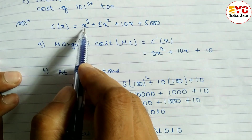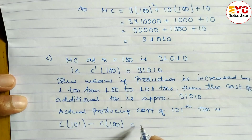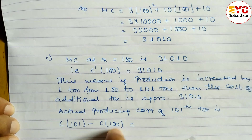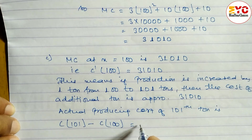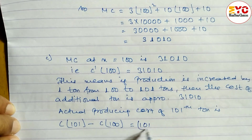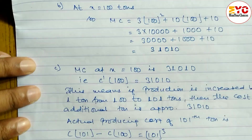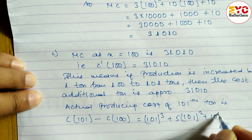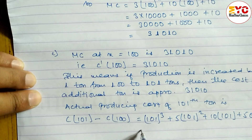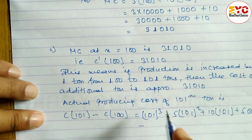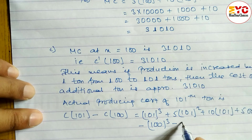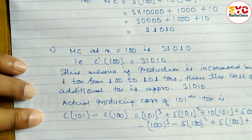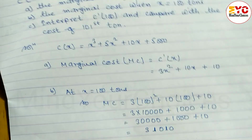To find the actual producing cost of 101 tons, we substitute x equal to 101 into the cost function: 101 cubed plus 5 times 101 squared plus 10 times 101 plus 5,000, and subtract C(100). Calculate and write down — you will get the answer. Hope you understand this question.